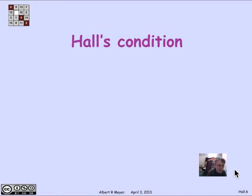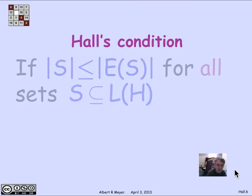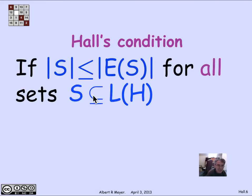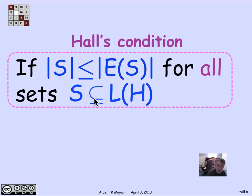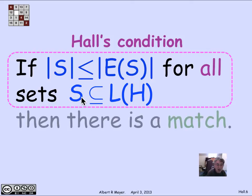We can state the no-bottleneck condition, Hall's condition, as follows. If the size of S is less than or equal to its image under the edges for every set of left vertices S of H — that's Hall's condition — then there is a match. This is a way of precisely stating Hall's theorem, with no boys and girls mentioned.